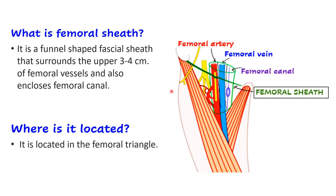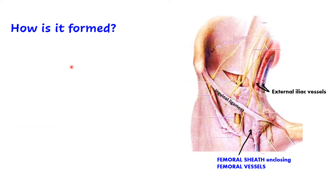The femoral sheath is located in the femoral triangle and is made up of deep fascia. The inguinal ligament separates the pelvis from the thigh, and the femoral sheath is present just below it, enclosing the femoral artery, femoral vein, and the femoral canal. The external iliac vessels are called femoral vessels as soon as they cross or pass behind the inguinal ligament.